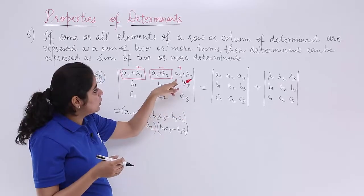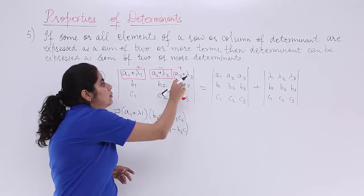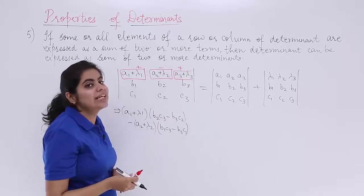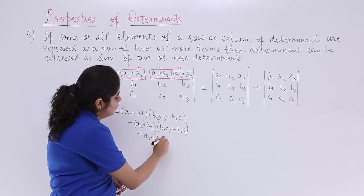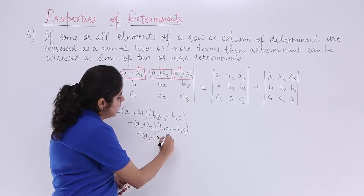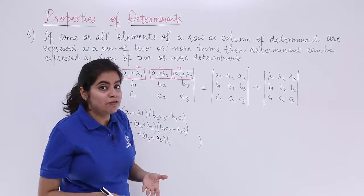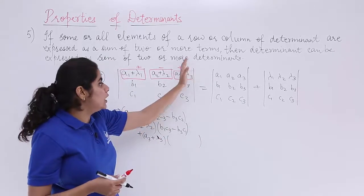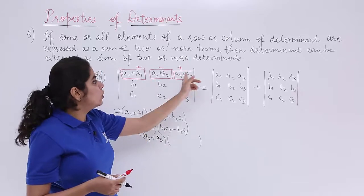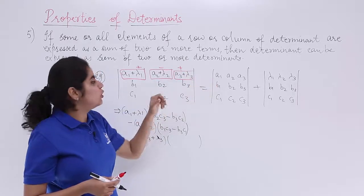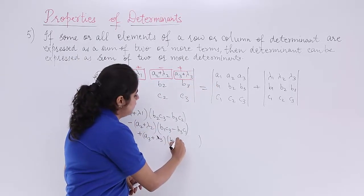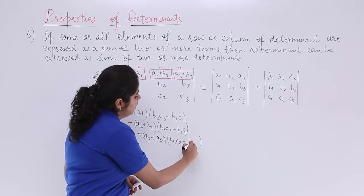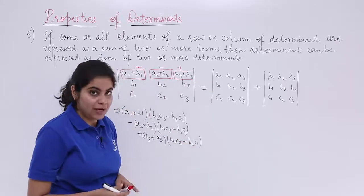The third element is a3 plus lambda3, giving plus (a3 plus lambda3). Ignoring the first row and third column, we are left with b1, b2, c1, c2, which cross-multiplies to give b1·c2 minus b2·c1.